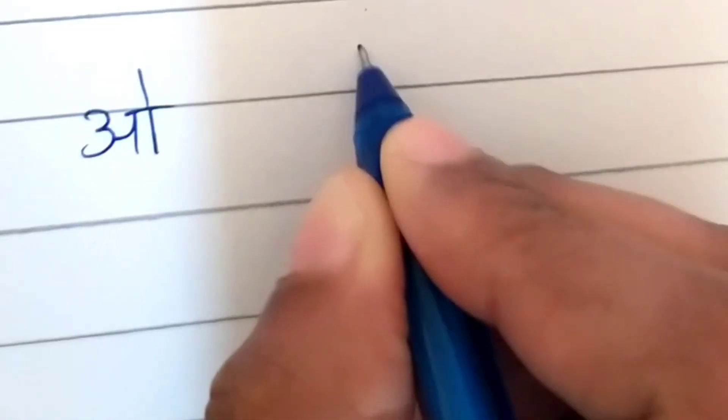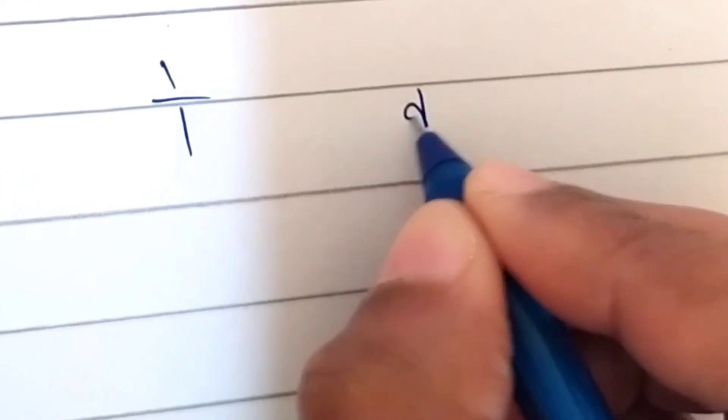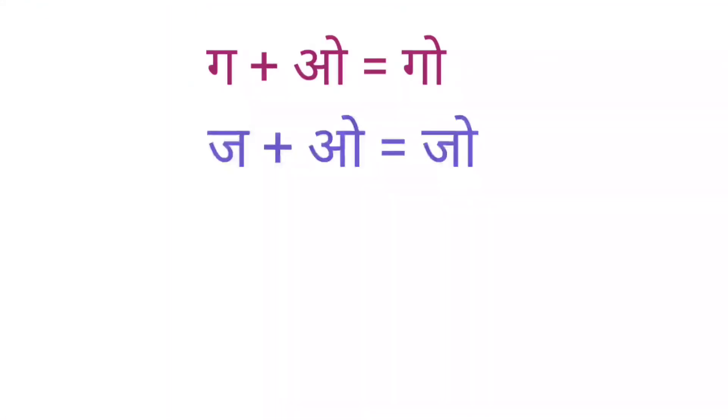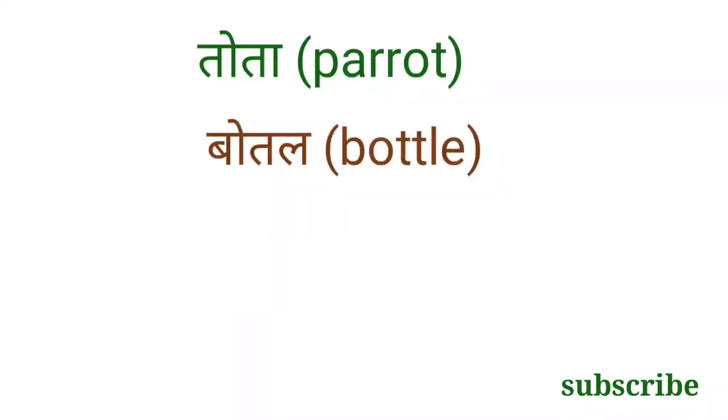Next vowel, O. This is the symbol. Ko, Go, Jo, Do. Tota, Bottle, Moor, Kargosh.